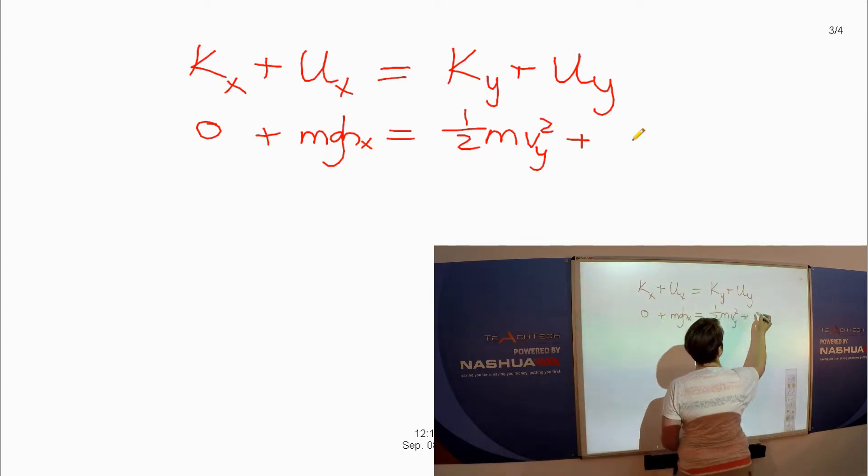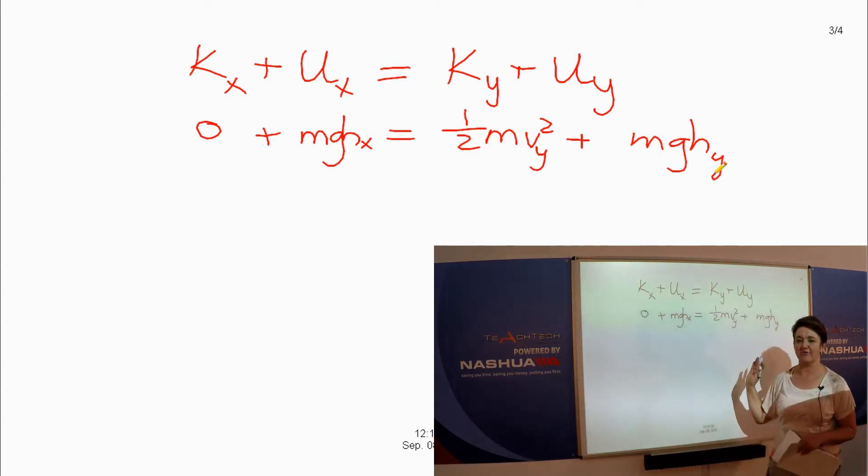So now we're going to use our formulas from the formula sheet. But before you substitute in here, kinetic energy is zero. The initial velocity is zero. Plus here we have a potential which is mgh at X. And now we are going to look for the velocity at Y. Plus there is also potential energy at Y. It's not on the ground yet. It's still one meter above. Now we'll just substitute.